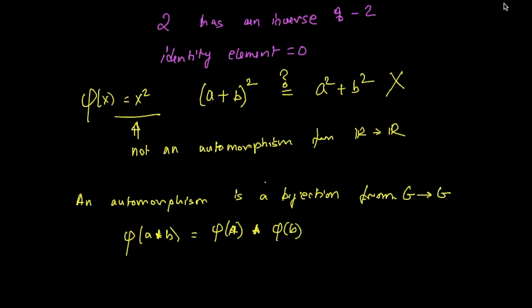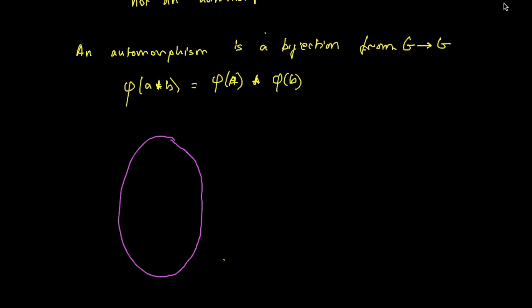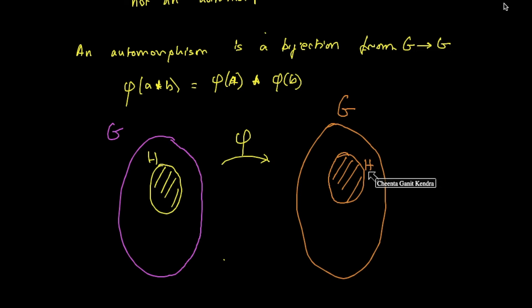Coming back to our picture, remember we were interested in characteristic subgroups. If we have G and its subgroup H, and we are looking at the map from G to G, let's draw another copy of G with a copy of H. What's happening here is that H is being mapped to itself.